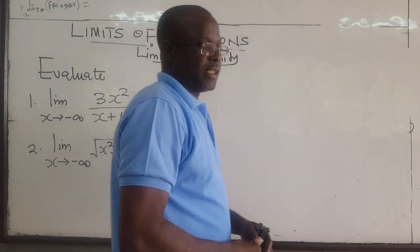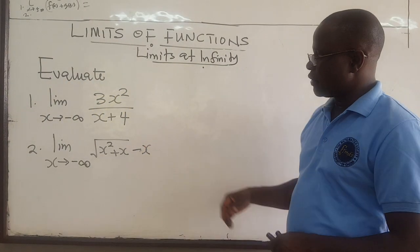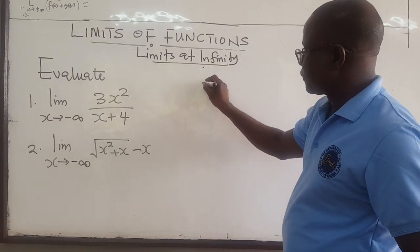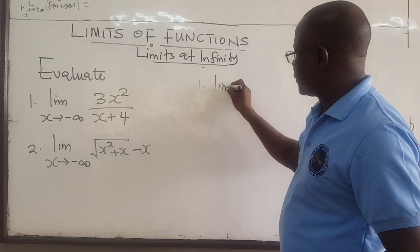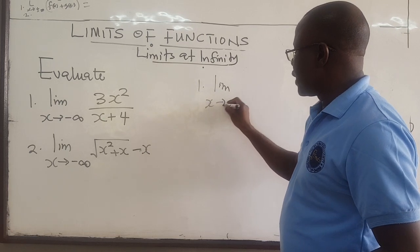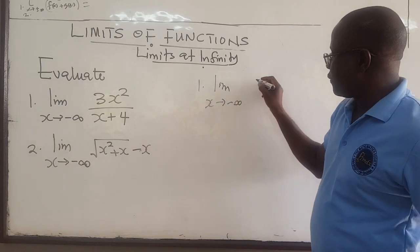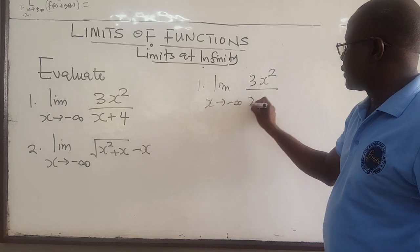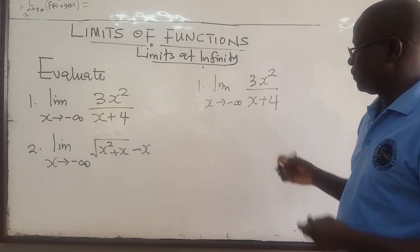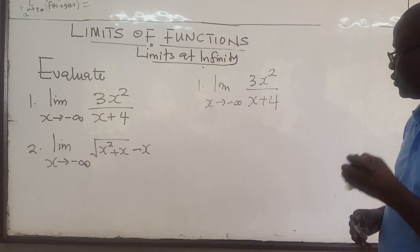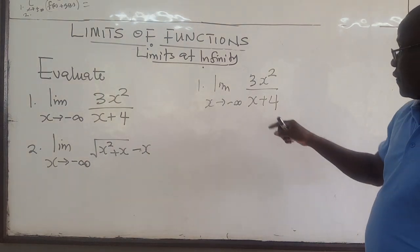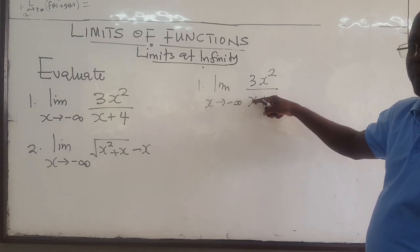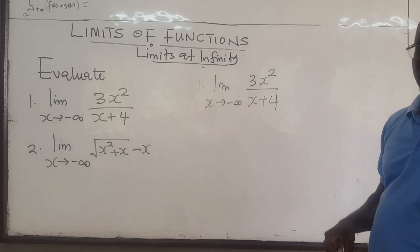Let's finish off with finding the limit of these two examples. We have the limit as x approaches negative infinity of 3x squared all over x plus 4. So for this rational function, you can do the same thing: divide by the highest power in the denominator, which is x. So you divide the denominator by x and the numerator by x as well.